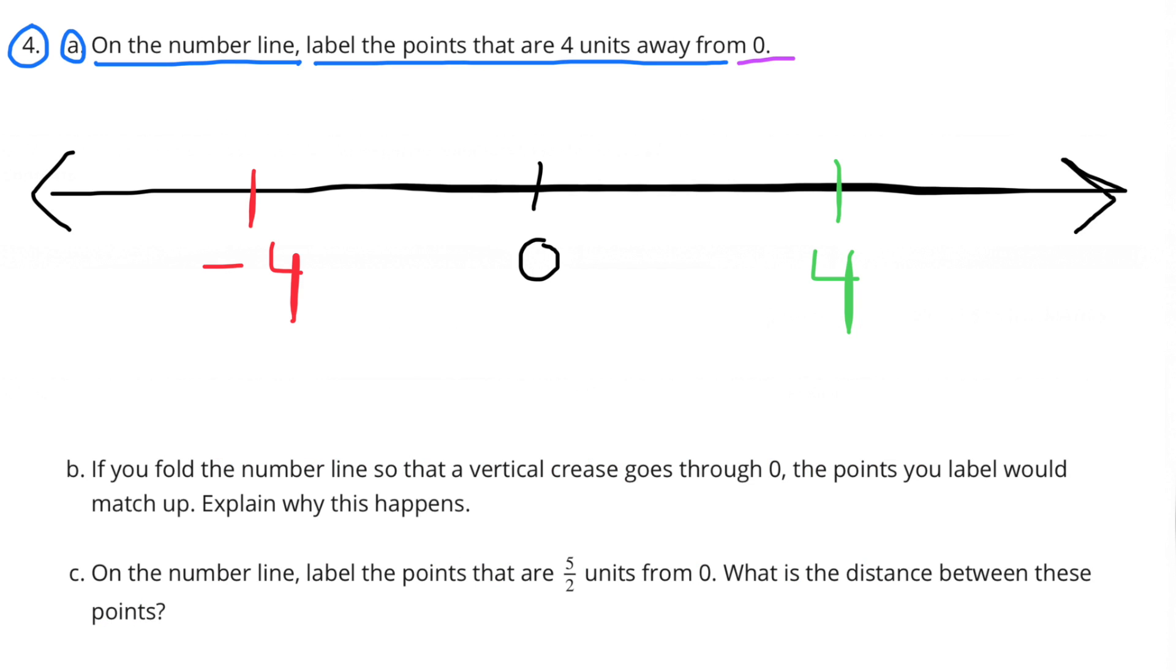Number 4. A. On the number line label the points that are 4 units away from 0.